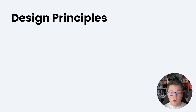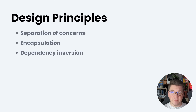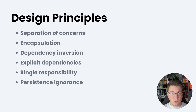You also want to follow some high-level design principles that are going to ensure that you build a quality system. These principles are the separation of concerns, encapsulation, dependency inversion, explicit dependencies, single responsibility, and the persistence ignorance principle. All of these design principles are closely aligned with the concepts and ideas promoted by the clean architecture.